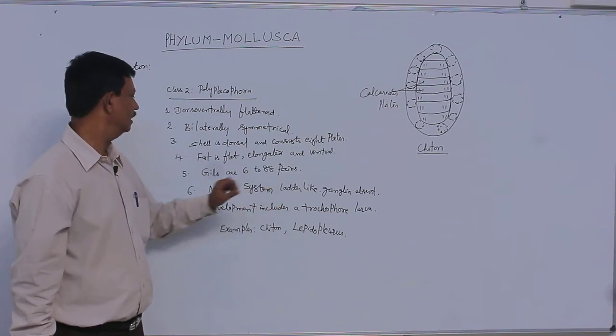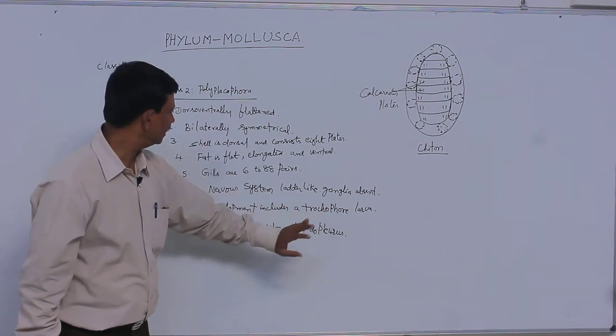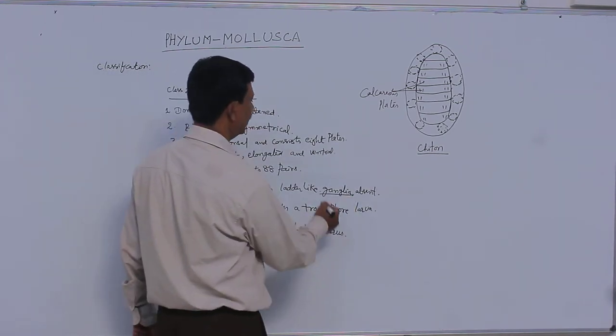They help with respiration. The nervous system is lateral. Hence they are known for having a lateral nervous system. But here ganglia are absent.